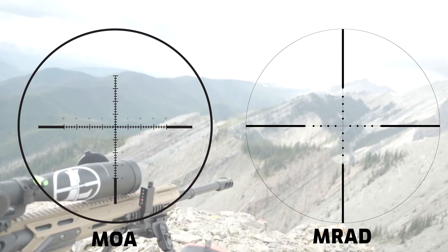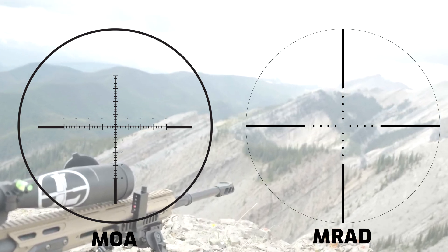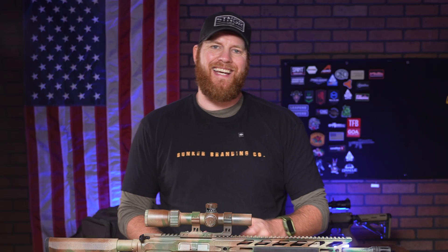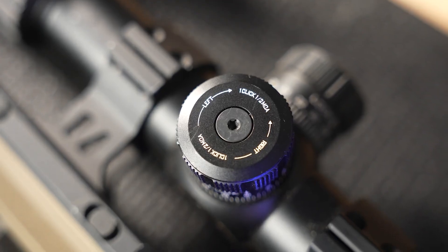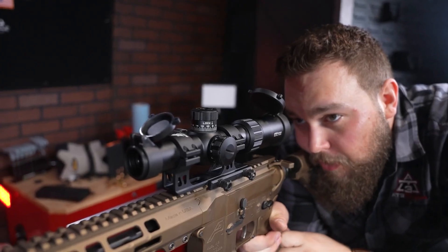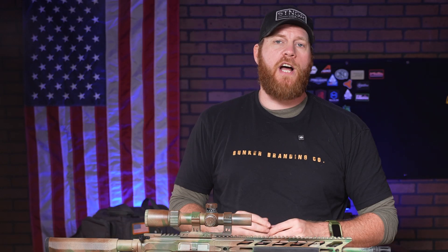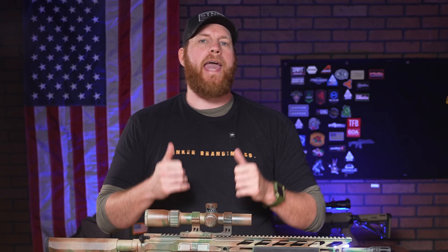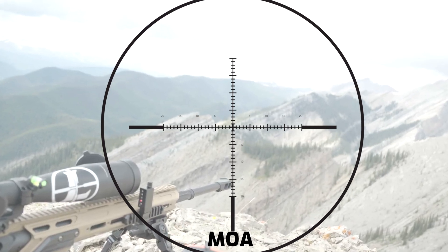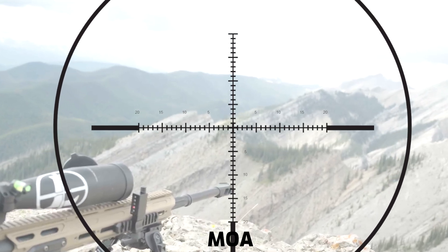Your scope's reticle and turrets use MOA or MRAD to adjust your aim. Think of the reticle as a ruler inside your optic. For MOA scopes, turrets often click in quarter-MOA increments. One click moves your shot a quarter of an inch at 100 yards, or 1.25 inches at 500 yards. If your shot is 2 inches low at 100 yards, that's 2 MOA or 8 clicks up. The reticle hash marks are spaced in MOA so you can hold over and measure your misses directly using the reticle.